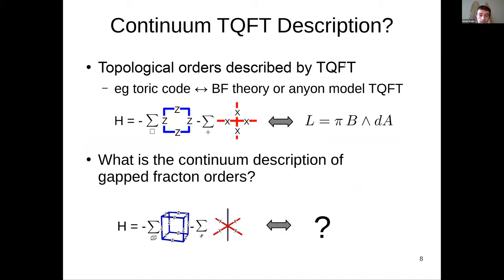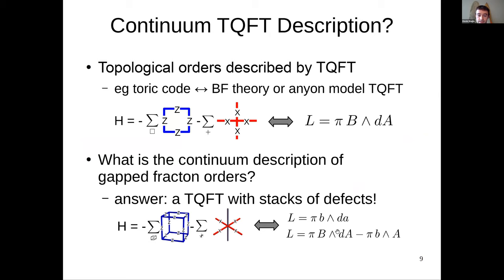One difference from TQFTs like Toric code is that we don't have a nice continuum description of Fracton models yet — no TQFT description. Toric code can be described by BF theory or an anyon model, but for gapped Fracton models, there's no clear continuum description at the moment. In this talk, I'd like to describe what that is. I want to convince you that the answer is a topological quantum field theory, but with stacks of defect layers.